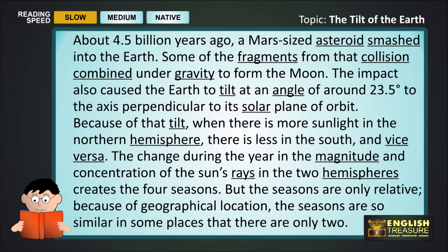Because of that tilt, when there is more sunlight in the northern hemisphere, there is less in the south, and vice-versa. The change during the year in the magnitude and concentration of the sun's rays in the two hemispheres creates the four seasons.